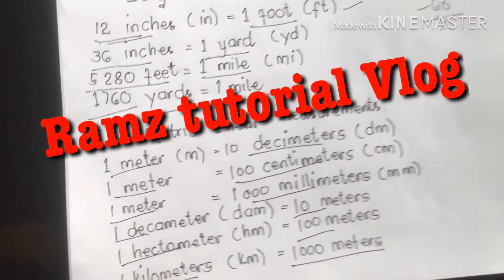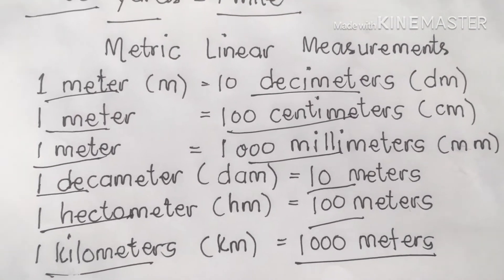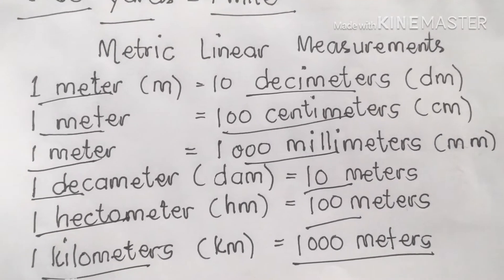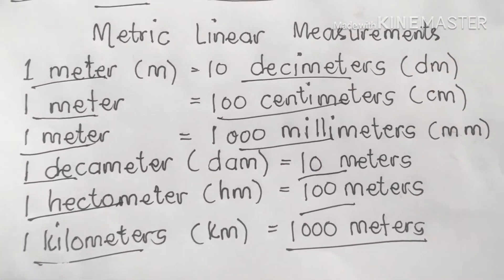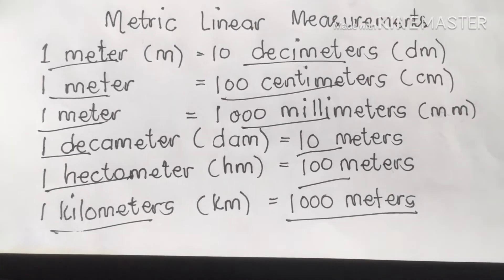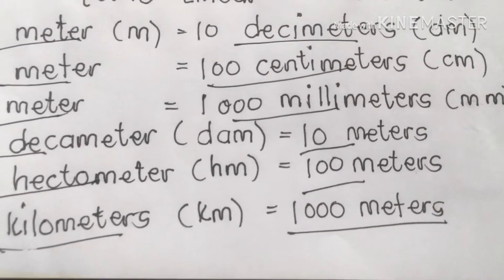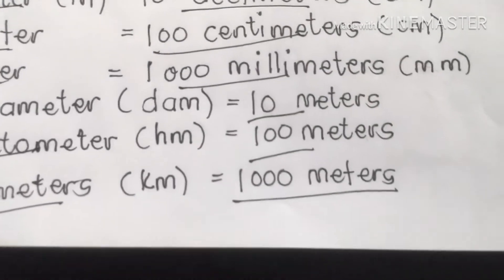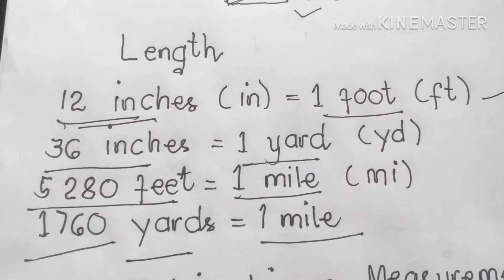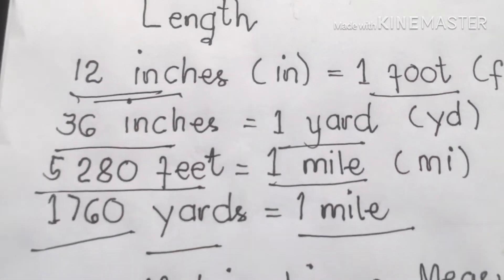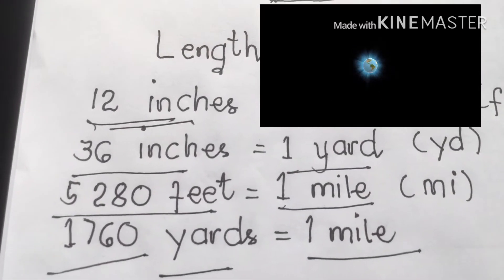Remember in conversions, we should master the formula first. Metric linear measurements: 1 meter equals 10 dm; 1 meter equals 100 centimeters; 1 meter equals 1,000 millimeters; 1 dam or decameter equals 10 meters; 1 hectometer equals 100 meters; 1 kilometer equals 1,000 meters. For length: 12 inches equals 1 foot; 36 inches equals 1 yard; 5,280 feet equals 1 mile; 1,760 yards equals 1 mile.